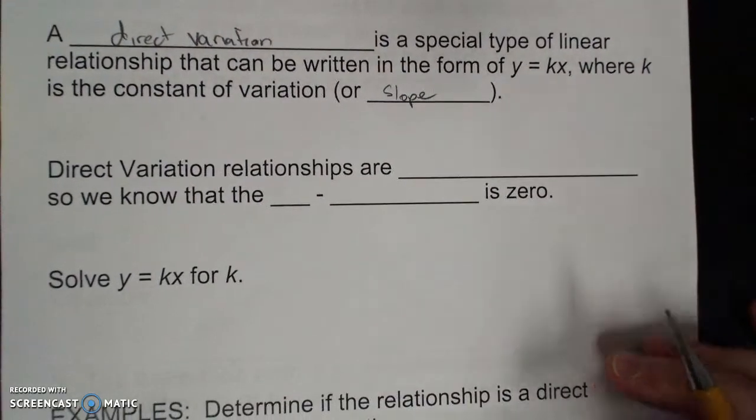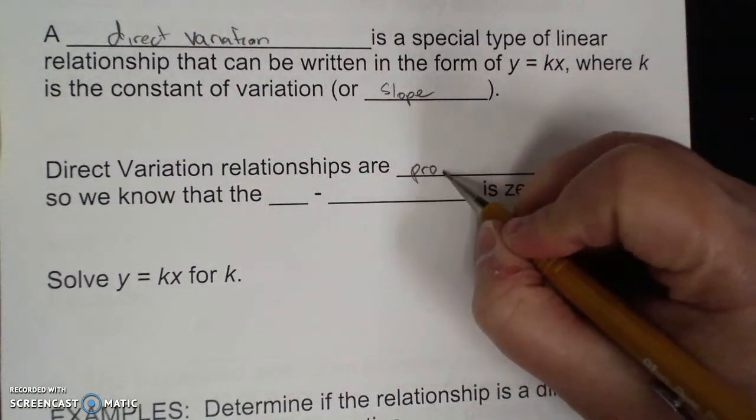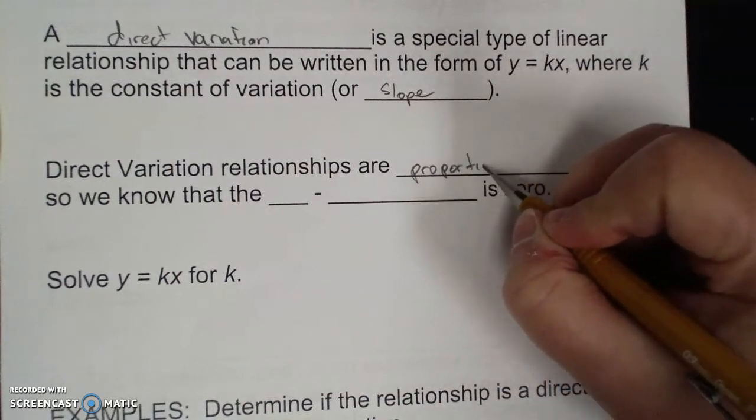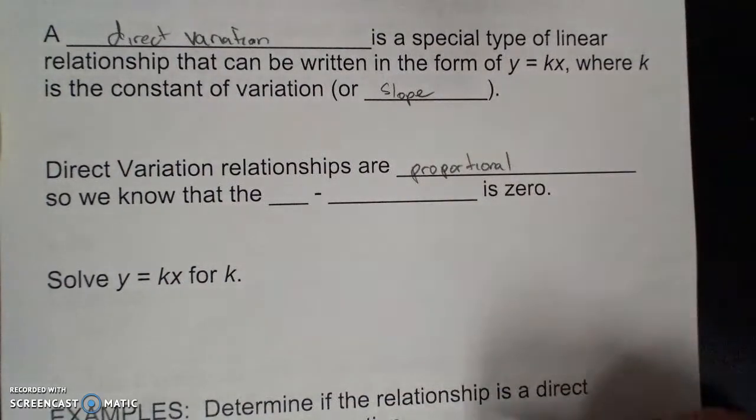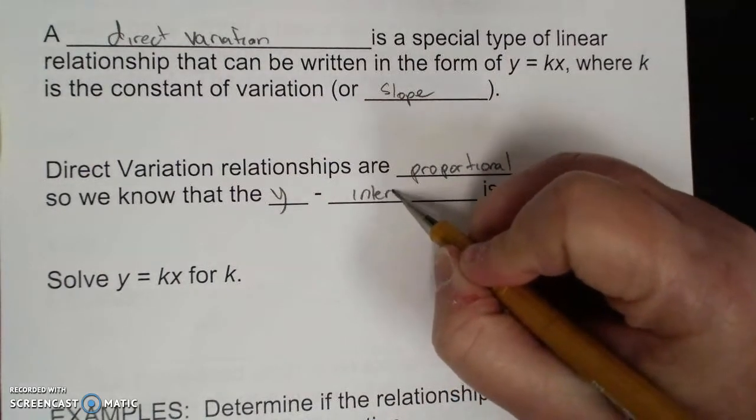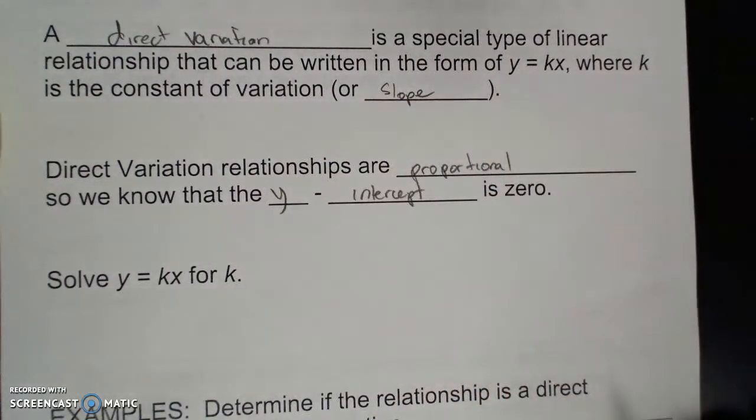Direct variation relationships are proportional, so we know that the y-intercept is zero.